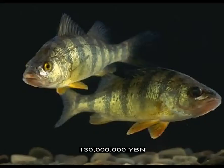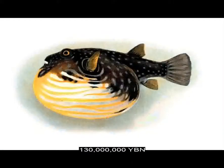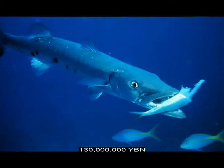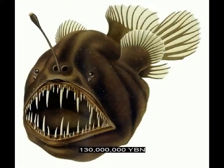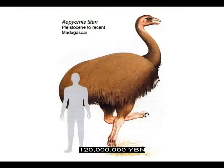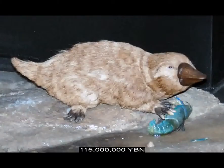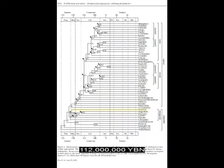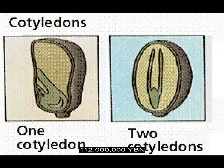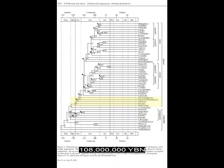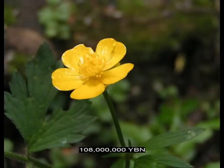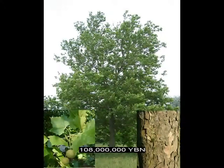Teleosts: perch, seahorses, flying fish, pufferfish, barracuda. Teleosts: cod, anglerfish. Neornithes evolve — modern birds. Earliest extant mammals — monotremes evolve. Flowers monocots evolve — flowering plants that have a single cotyledon, seed leaf in the embryo. Flowers basal eudicots — buttercup, poppy, macadamia, sycamore.